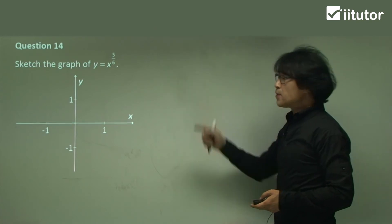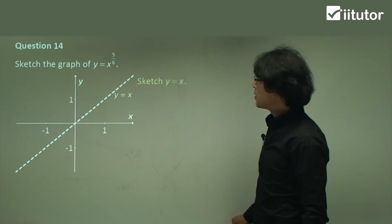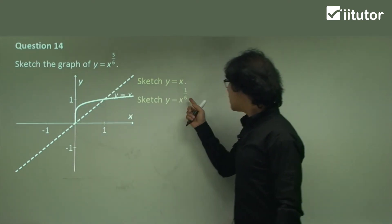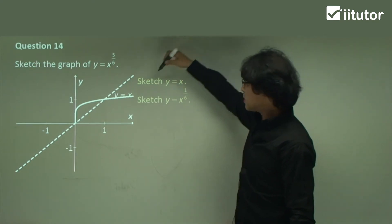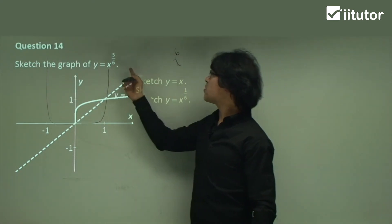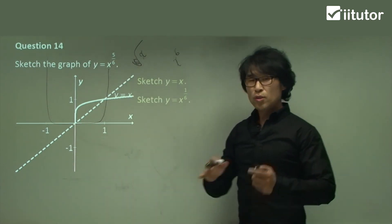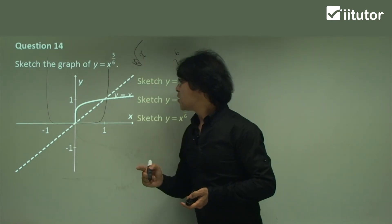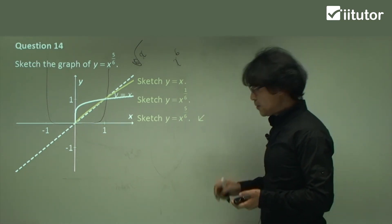Question 14: x to the power of 5 over 6. Still less than 1. Sketch y equals x, then sketch x to the power of 1 over 6. One over 6 equals the inverse function of x to the power of 6 — still even power, so negative is not allowed as input. Then raise to the power of 5, which is still less than 1 — still a little above but very close to the axis.